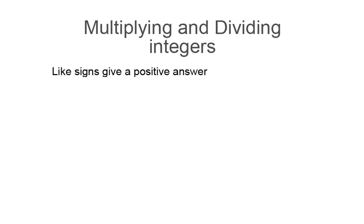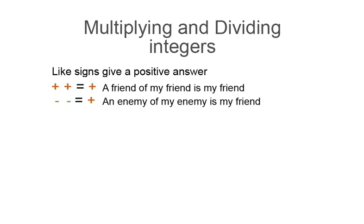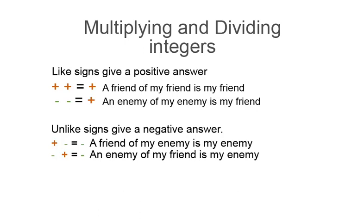As a handy reminder for multiplying and dividing integers, think of friends (positive numbers) and enemies (negative numbers). A friend of your friend is your friend — positive times positive is positive. An enemy of your enemy is your friend — negative times negative is positive. A friend of your enemy is your enemy, and an enemy of your friend is also an enemy — unlike signs give a negative answer. Like signs give a positive answer, unlike signs give a negative answer.